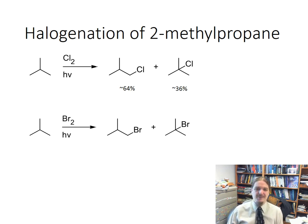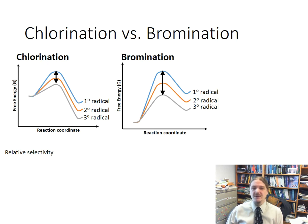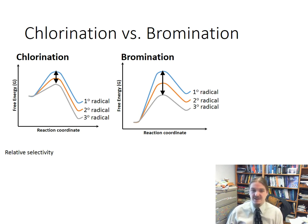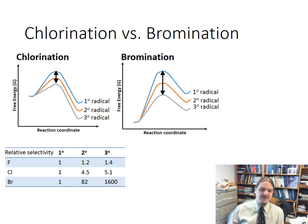For bromine, you would get what you'd expect: about 1% of the primary product and about 99% of the tertiary product. So what is going on? Here are those energy diagrams again — the issue is reactivity versus selectivity. At the bottom of this slide, there's a table of relative selectivities, and fluorine is included on purpose to highlight how reactive and how low in selectivity fluorine is.